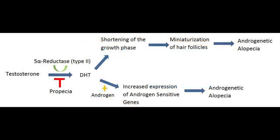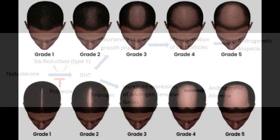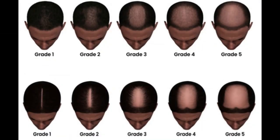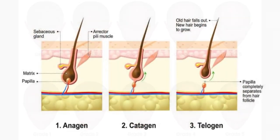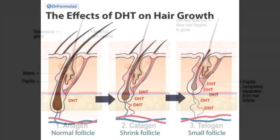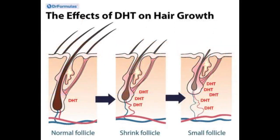Contrastingly, serum DHT provides a general overview of DHT levels throughout the body, but it might not accurately represent DHT activity in the scalp. For instance, an individual could have standard serum DHT levels but significantly higher scalp DHT levels, positioning them at a risk for androgenetic alopecia. Conversely, a reduction in serum DHT doesn't always equate to diminished scalp DHT.